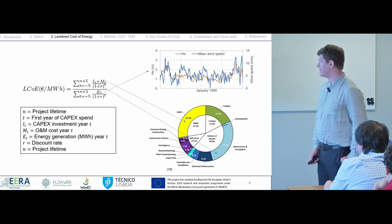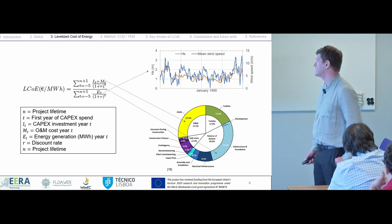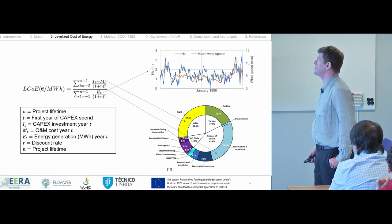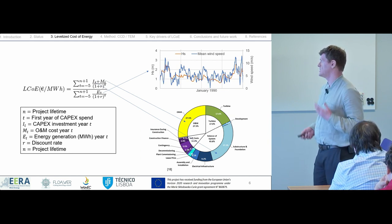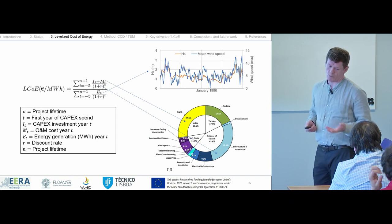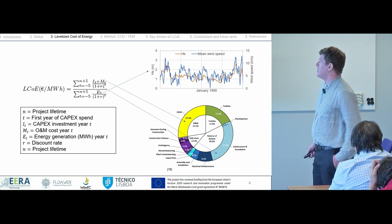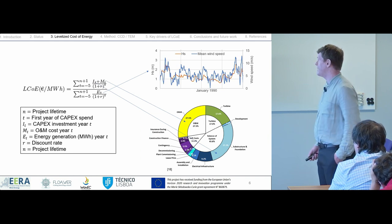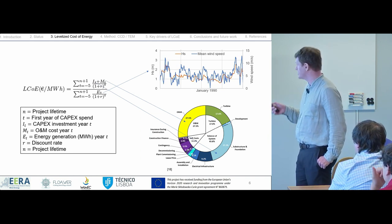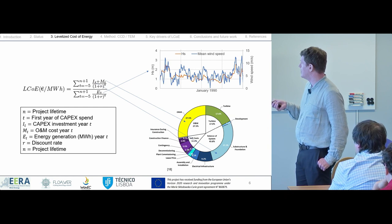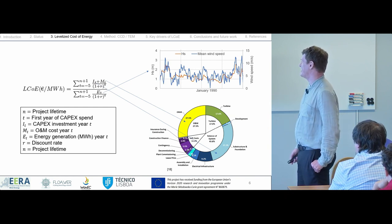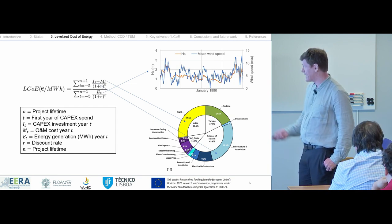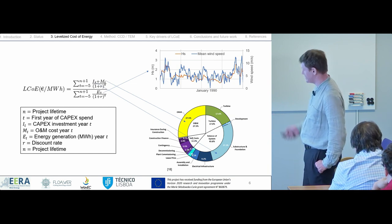Moving into levelized cost of energy, it's a good idea to look at that metric before we go into the main drivers of it. The levelized cost of energy is the average cost of producing one megawatt hour of energy — essentially your lifetime costs divided by your lifetime energy generation. That's the equation there on the top: your life cycle costs are discounted, divided by your discounted generation over time.